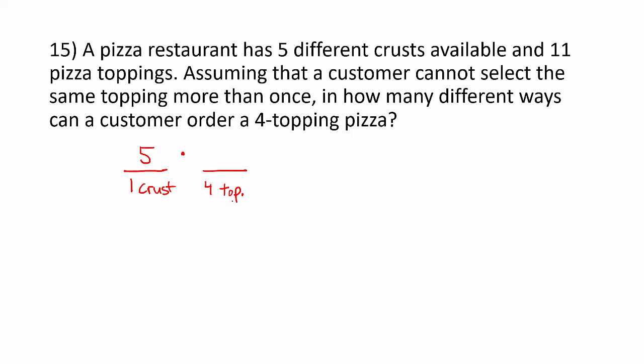Then for the pizza toppings, we are picking 4 out of 11 without repetition because they could not choose the same topping more than once. Does the order of selection matter? It doesn't. Each item selected will be on the pizza. So that is combinations, 11 choose 4. 11 choose 4 is equal to 330, and multiplying that by 5, we get 1650 different ways that a customer can order a 4-topping pizza.